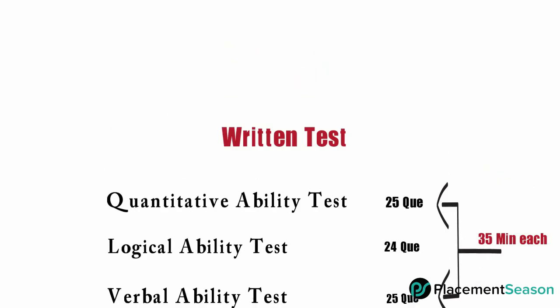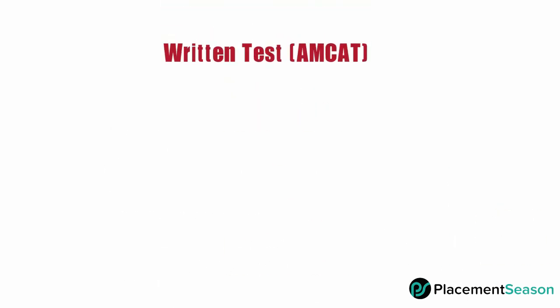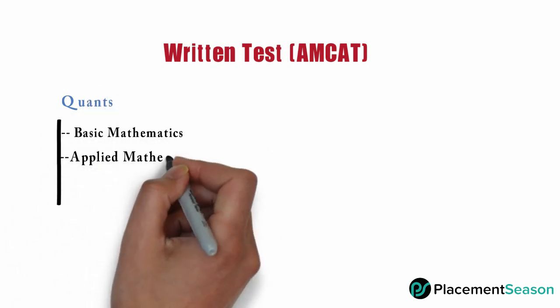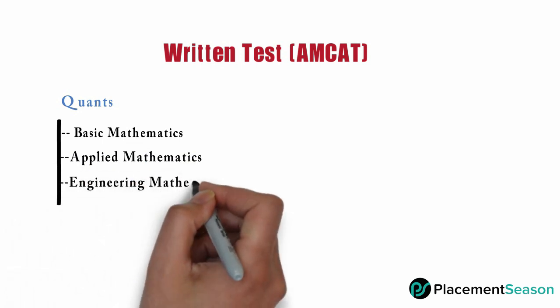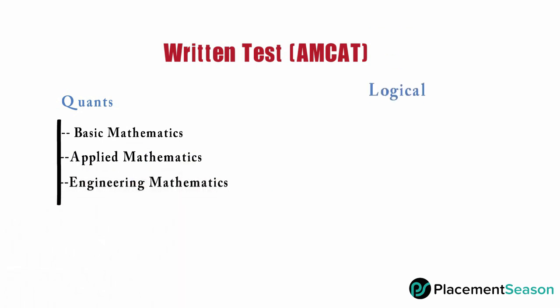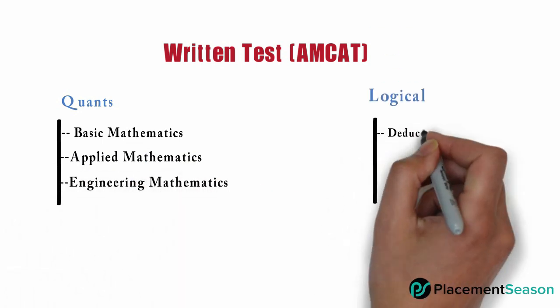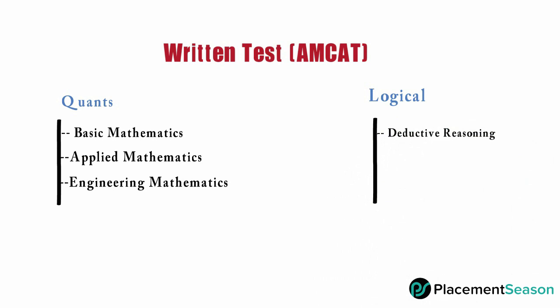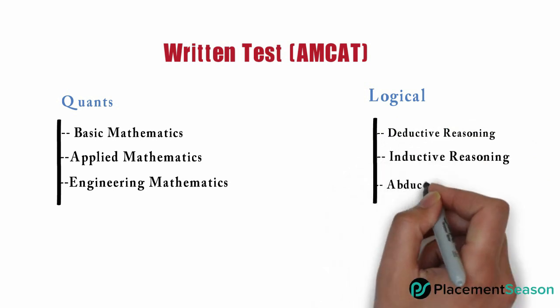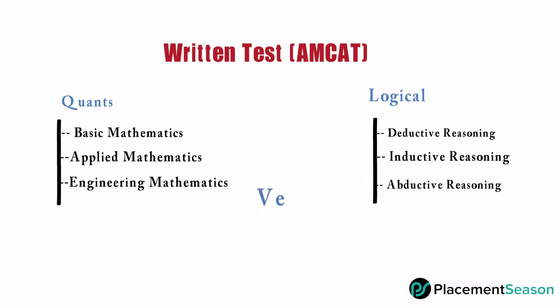Briefly about the different sections in the Written Test: the Quantitative Section will ask questions related to Basic Mathematics, Applied Mathematics, and Engineering Mathematics. The Logical Section will ask questions related to Deductive Reasoning, Inductive Reasoning, and Abductive Reasoning. For the Verbal Section, be prepared for Vocabulary, Grammar, and Reading Comprehension.